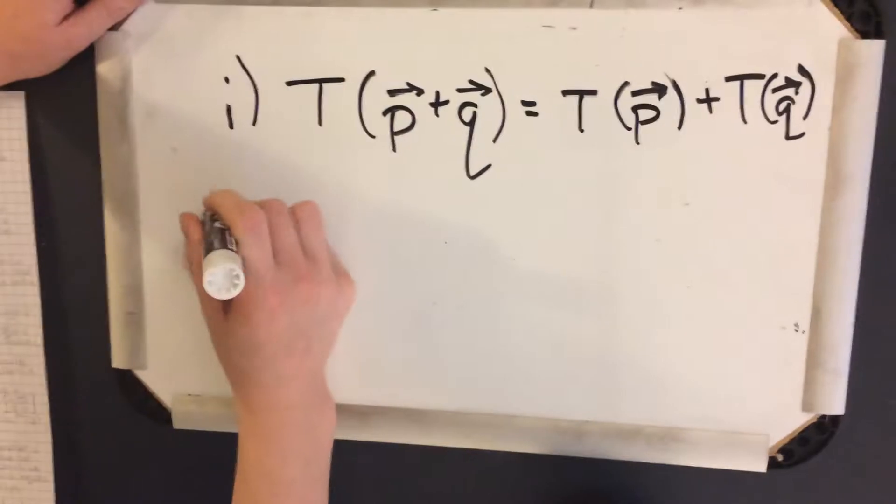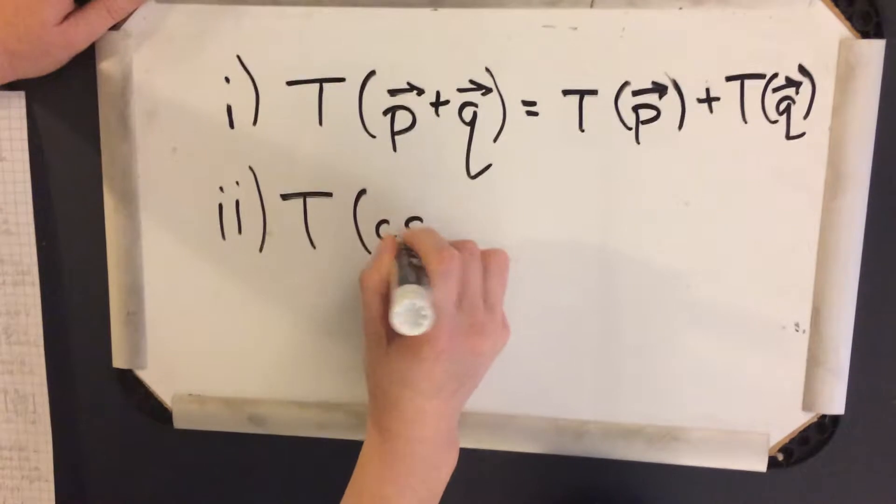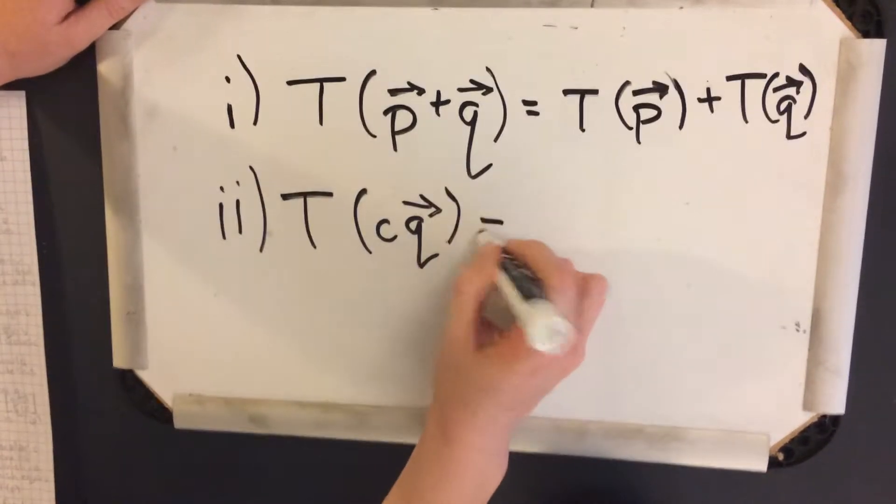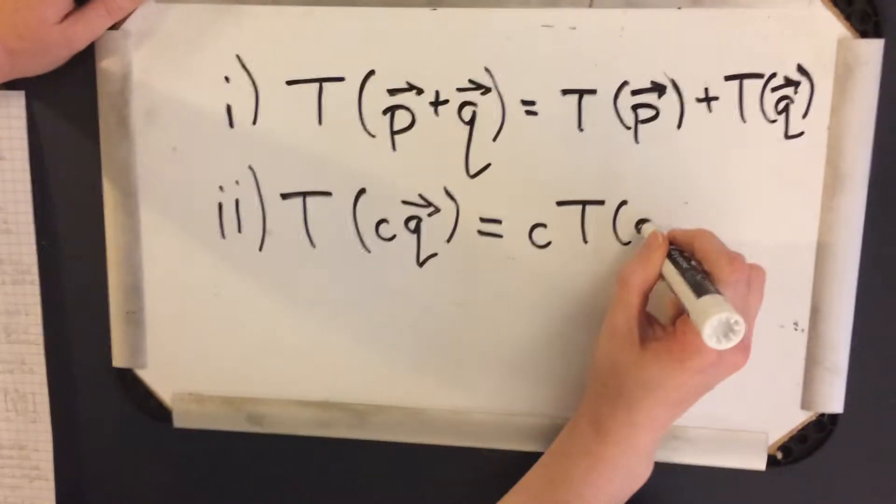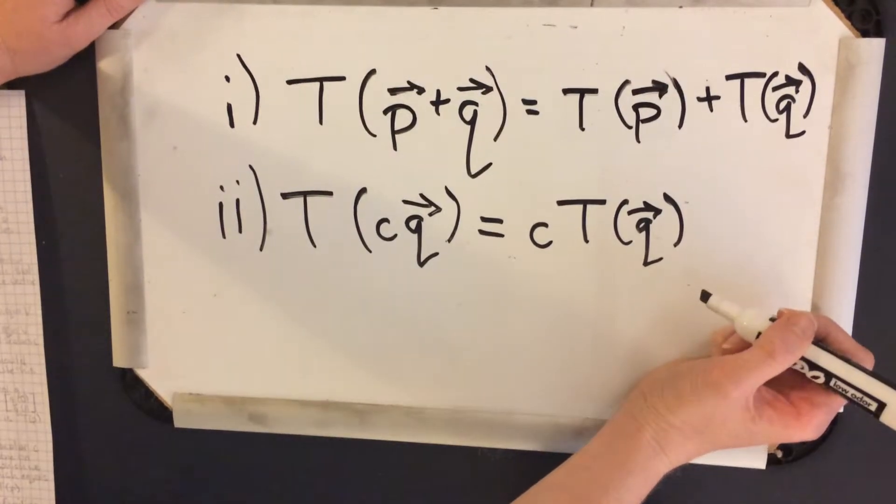The second property we can expect is that the transformation of some scalar c multiplied by the vector q should equal that same scalar multiplied by the transformation of q. And that's for all q in V and all scalars c.